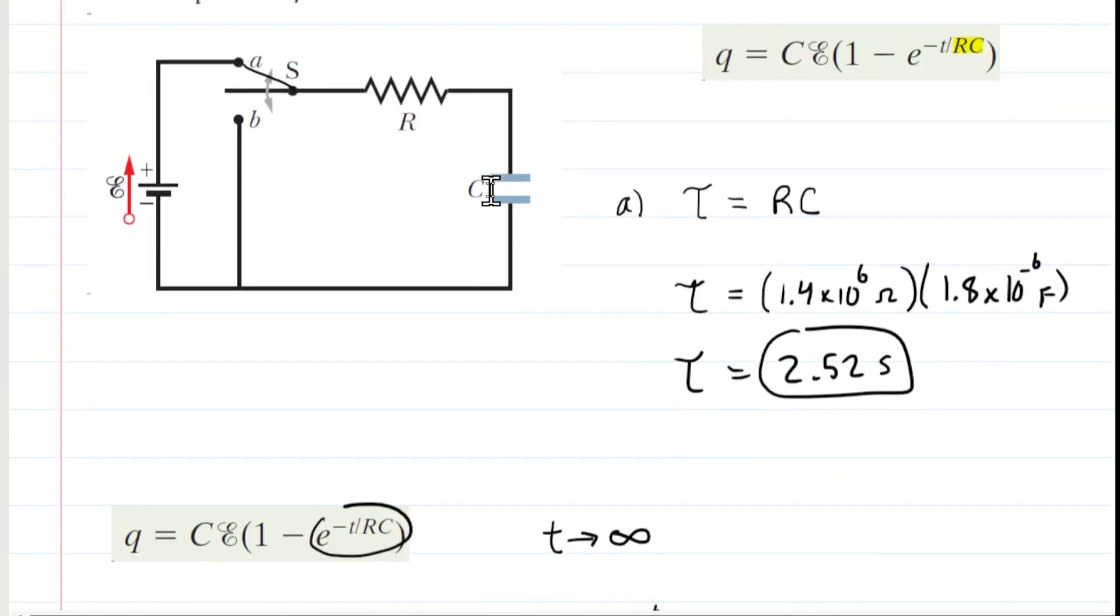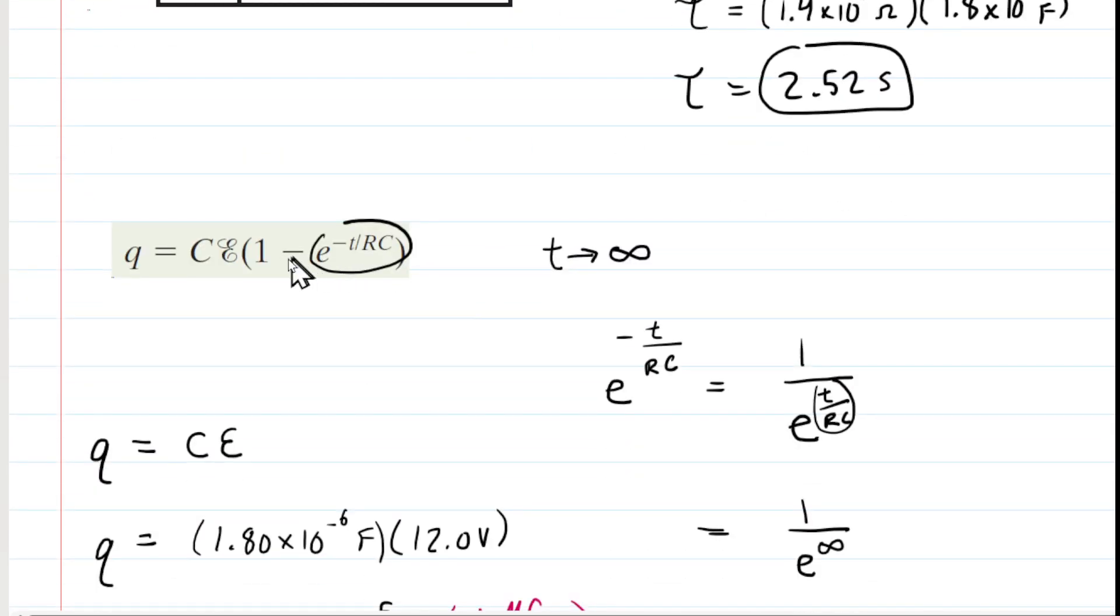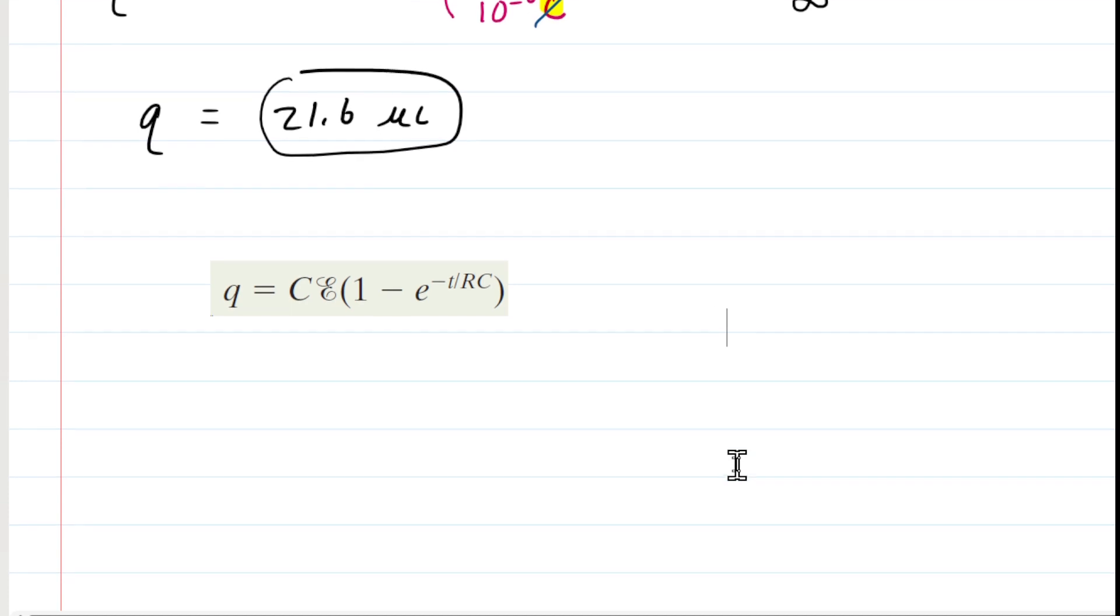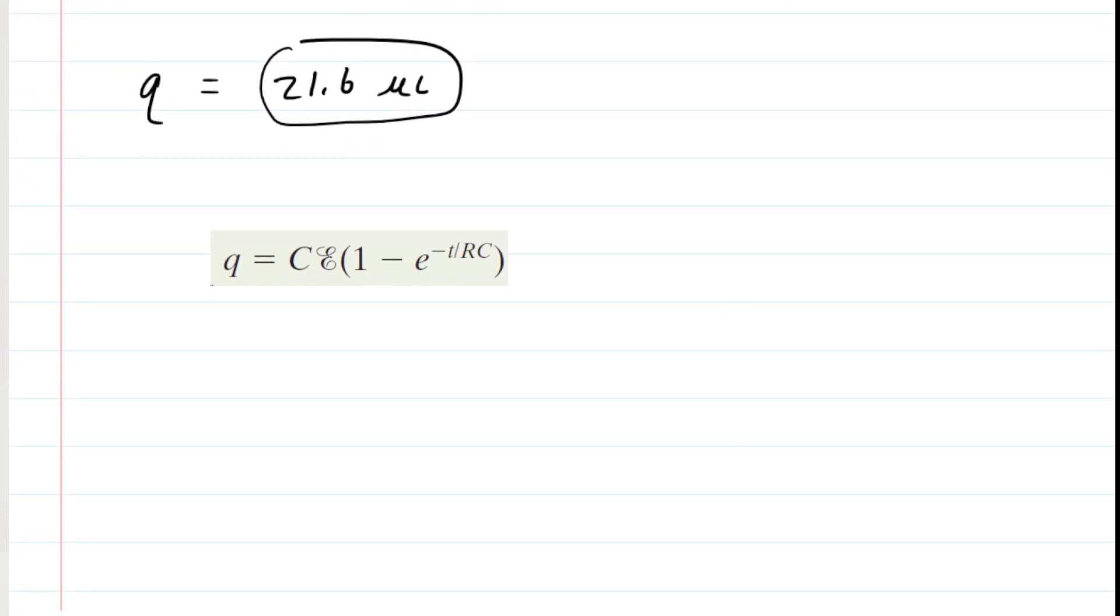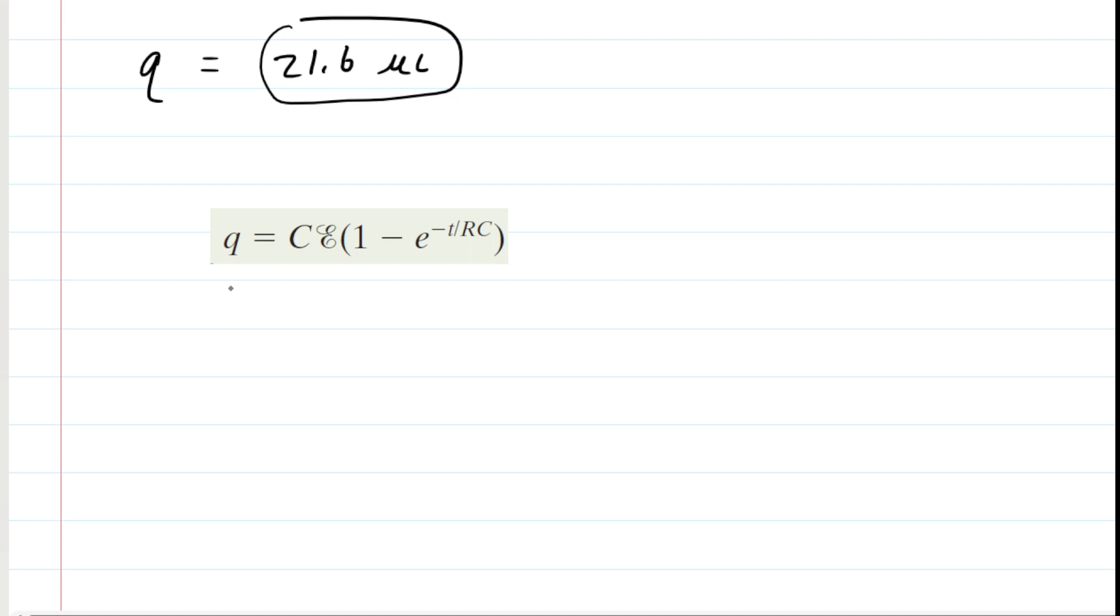There is one more part to the question which asks us in part C, how long does it take for the charge to build up to 16 micro coulombs? So 16 micro coulombs is less than the maximum amount of charge. We have to calculate how much time that's going to take us. Now we can go ahead and plug in the 16 micro coulombs. And we're going to plug that in for the little charge q there. So that's 16 micro coulombs.